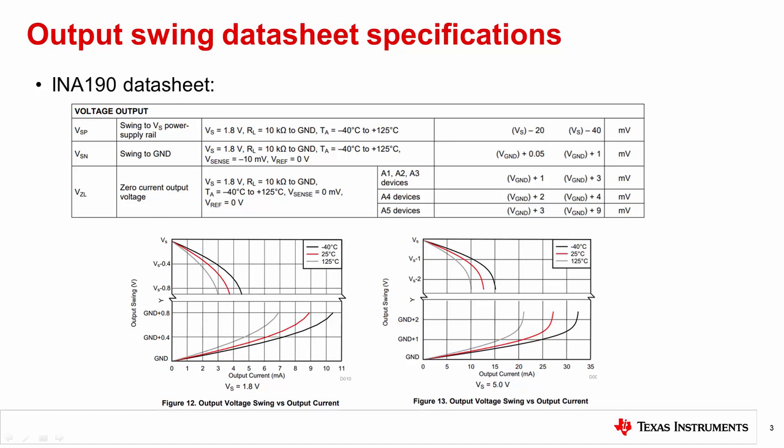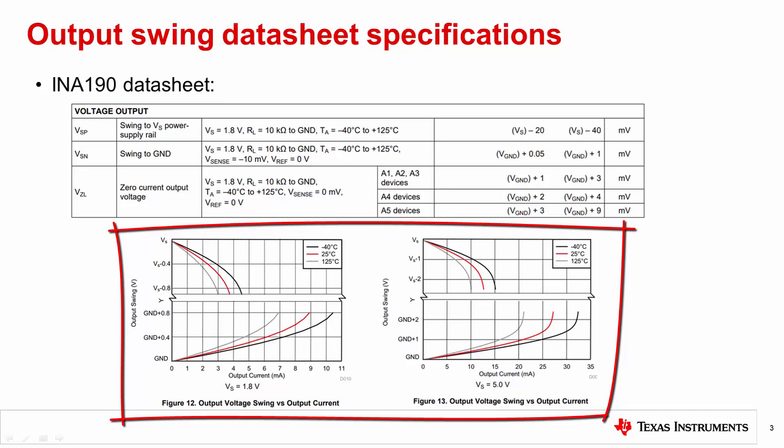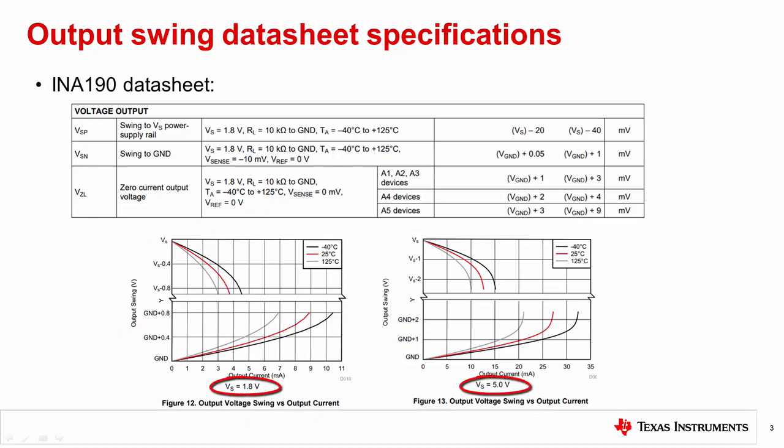In addition to common output swing parameters shown in the previous slide, the INA190 datasheet also provides a parameter called zero current output voltage in its spec table. The parameter is identical to swing to ground, except that the input differential overdrive is set to zero millivolts. The INA190 datasheet also provides two plots of the output swing versus output current for two different supply voltages respectively. Sometimes all of these curves can be combined into a single plot if practical. These are some of the different formats in presenting a device's output swing specifications.